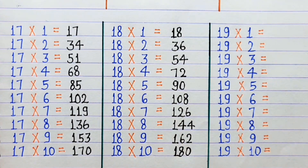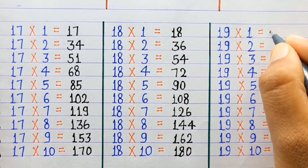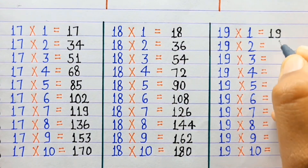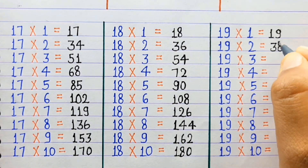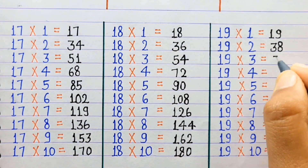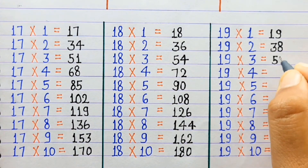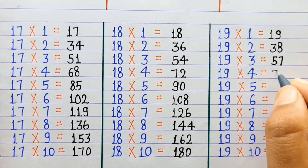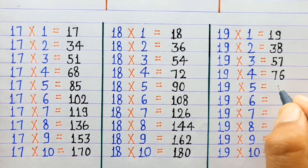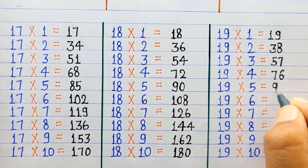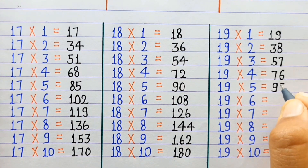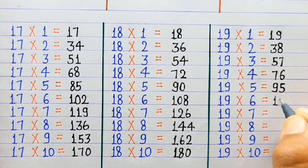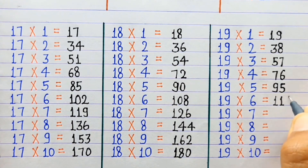19×1=19, 19×2=38, 19×3=57, 19×4=76, 19×5=95, 19×6=114.